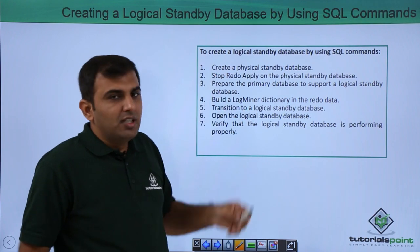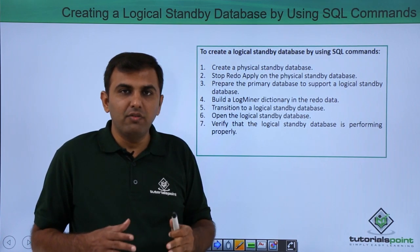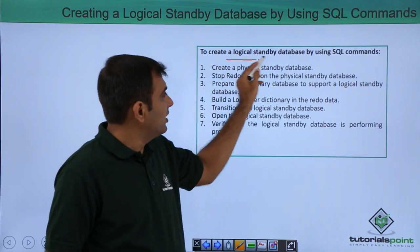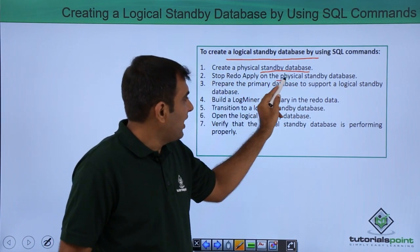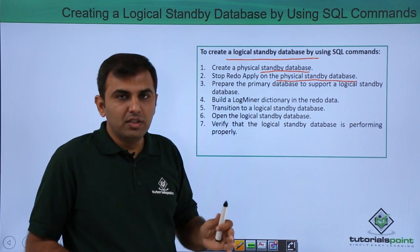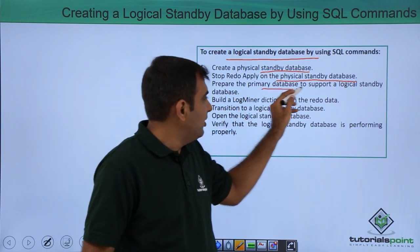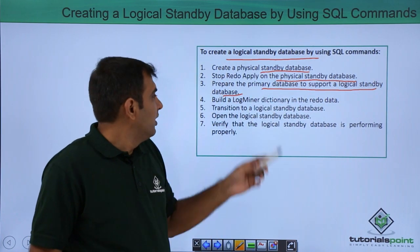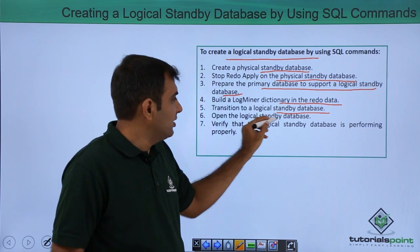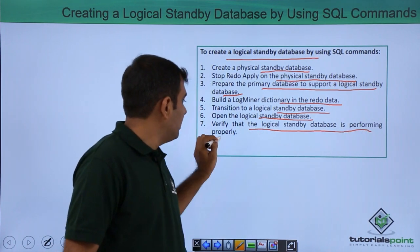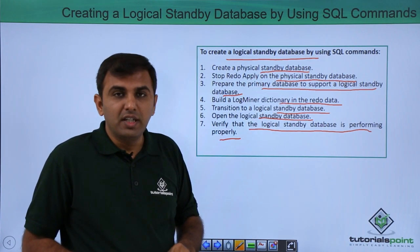Next, creating the logical standby using SQL commands. Once you have verified unsupported data types, unsupported tables, and row uniqueness, proceed to implementation. The steps are: create the physical standby database (already done in our case); stop redo apply on the physical standby; prepare the primary database to support the logical standby; build the log miner dictionary in the redo data; transition to the logical standby database; open the logical standby database; and verify it is performing properly.